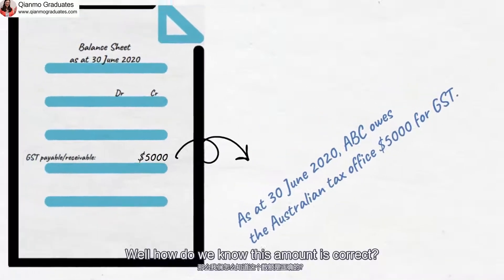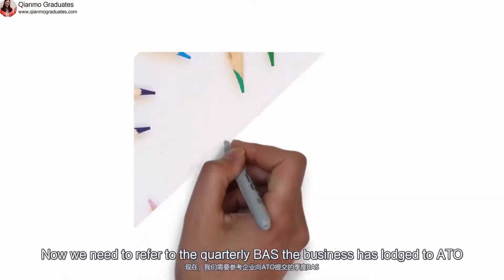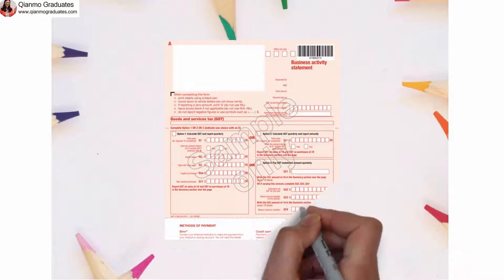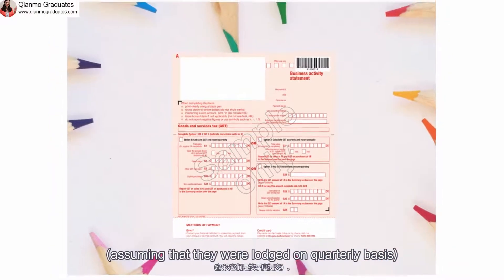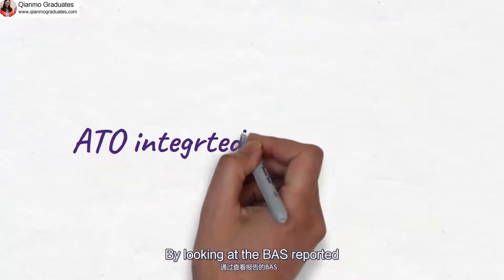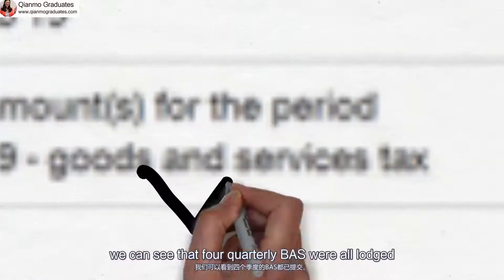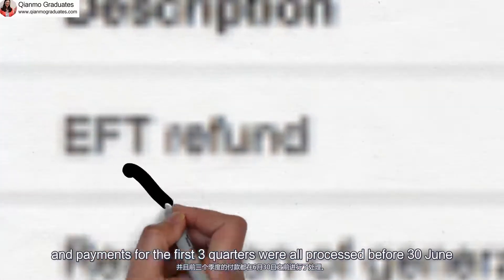Well, how do we know this amount is correct? Now, we need to refer to the quarterly BATS the business has lodged to the ATO, assuming that they were lodged on a quarterly basis. By looking at the BATS reported, we can see that 4 quarterly BATS were all lodged, and the payments for the first 3 quarters were all processed before 30th June.